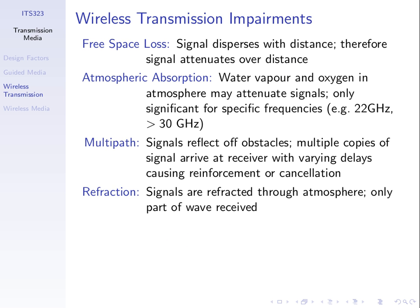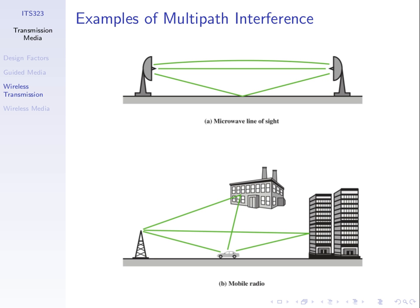An example of multipath: we have a transmitter and receiver on the ground. Our signals are made up of a range of frequencies — not one precise frequency — and even closely spaced frequencies propagate slightly differently. Some parts of the signal are received directly; other parts may go in a slightly different direction, bounce off the ground, and also be received. They arrive at different times because they travel different distances.